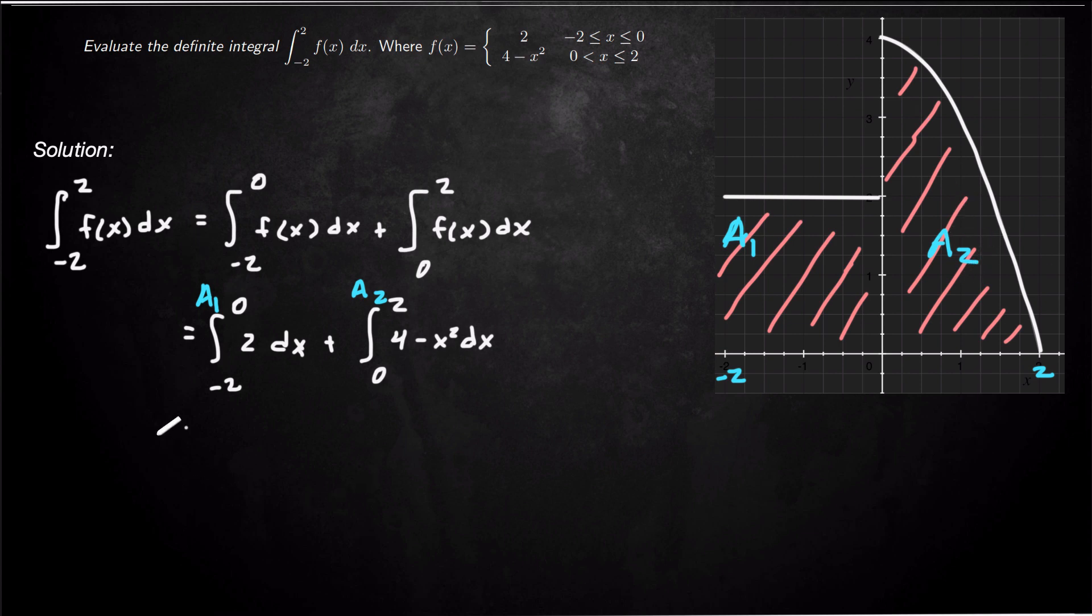So now all we have to do is just do the integration using the fundamental theorem of calculus part 2. So basically just find an antiderivative. So 2x from negative 2 to 0 plus 4x minus x cubed over 3 from 0 to 2. So we're finding antiderivatives here and then plugging in the bounds.